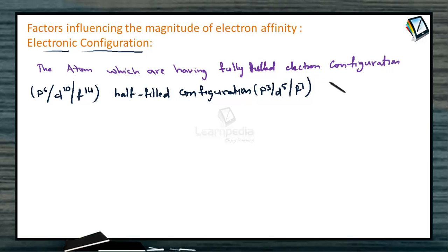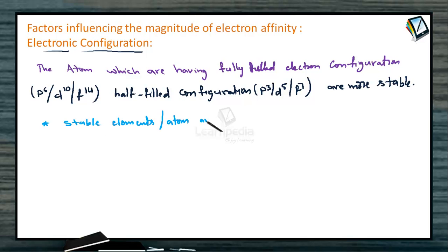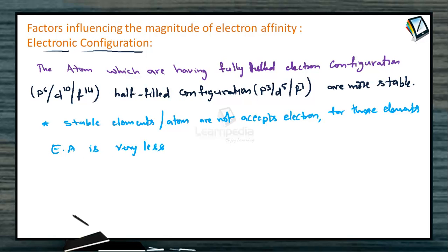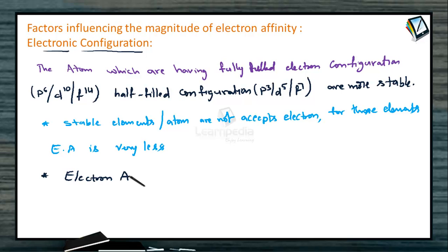Elements which have fully filled or half-filled configurations are more stable, and such stable elements do not want to accept or gain any electron. Stable atoms do not accept electrons, so for those elements electron affinity is very low. Take a simple example — inert gases have fully filled configuration in their valence shell, so they never participate in gaining electrons and the electron affinity of inert gases is zero.